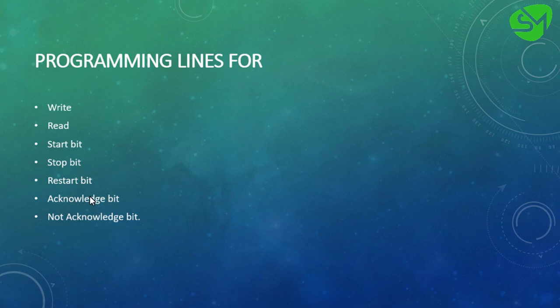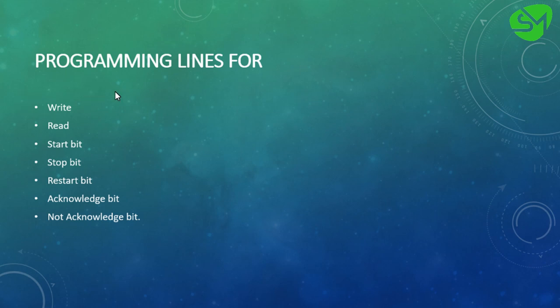The programming sequences we are going to see in this lecture are: how to write to the I2C bus, how to read from the I2C bus, and the programming sequence for start bit, stop bit, restart bit, acknowledgement bit, and not-acknowledgement bit. These sequences are specially meant for establishing I2C communication in our PIC microcontroller and can be used for any device using I2C communication, not only the DS1307.